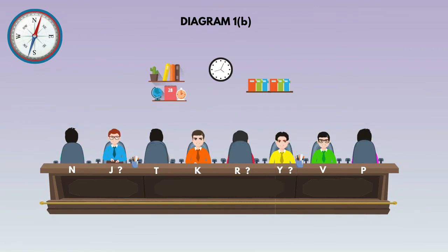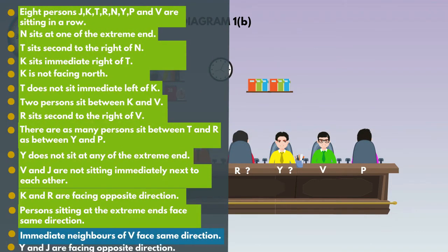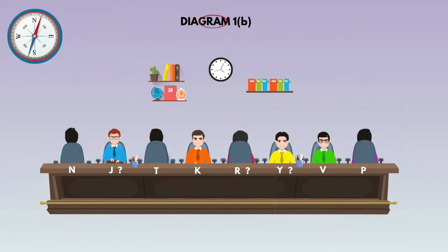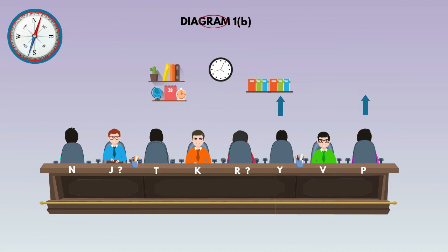Go to the next statement: Immediate neighbors of V face same direction. In diagram 1B, the immediate neighbors of V are Y and P. P faces north direction, so Y must also face north direction because immediate neighbors of V face same direction.